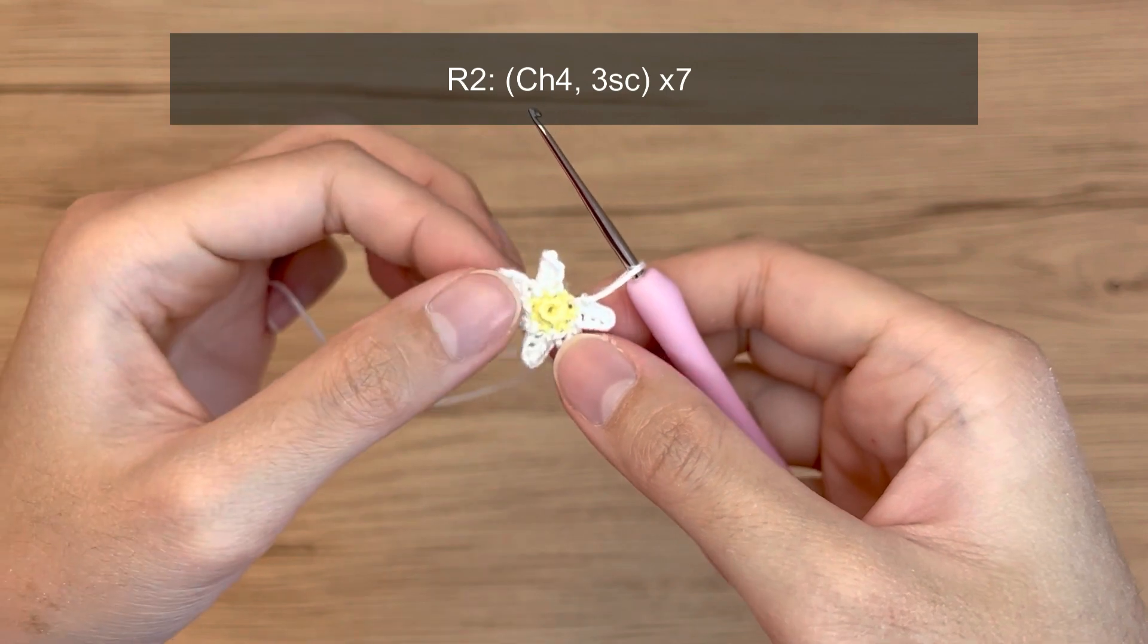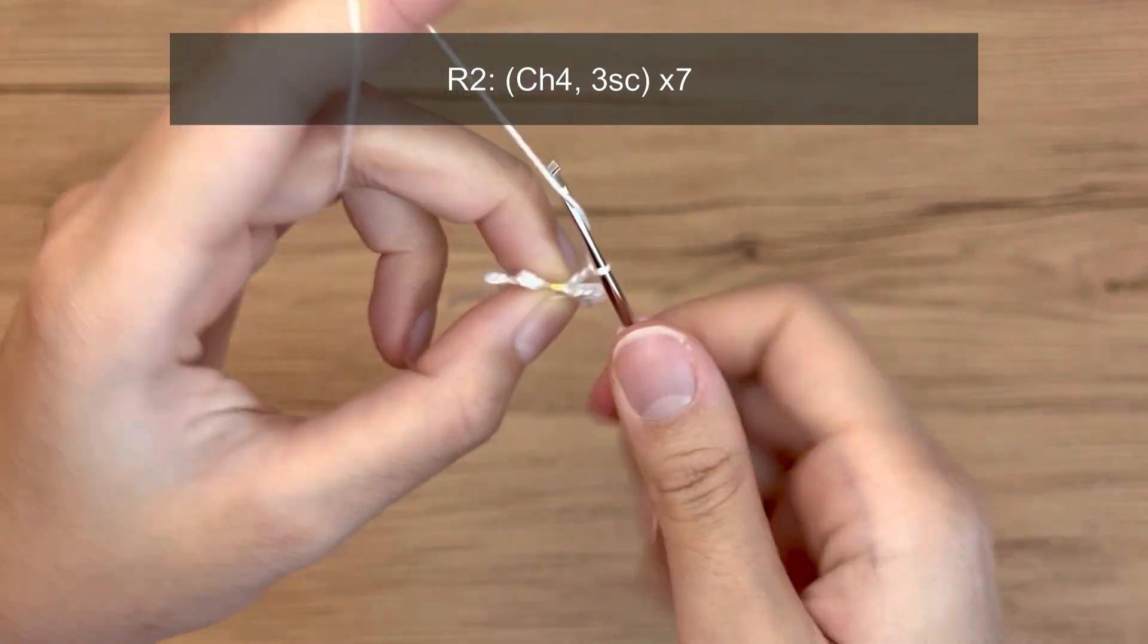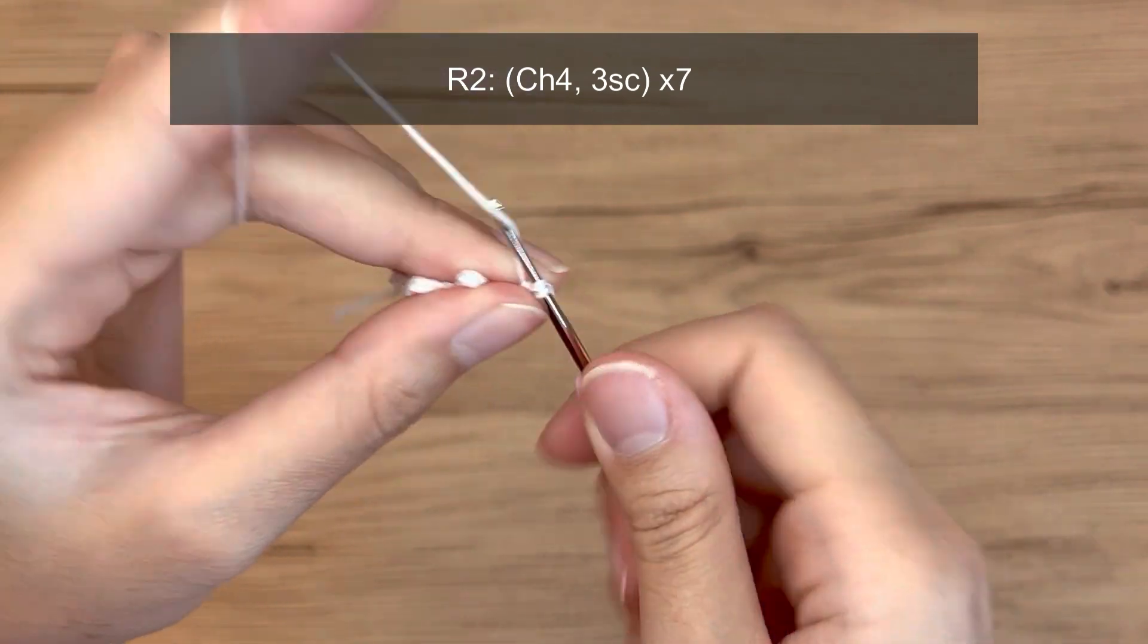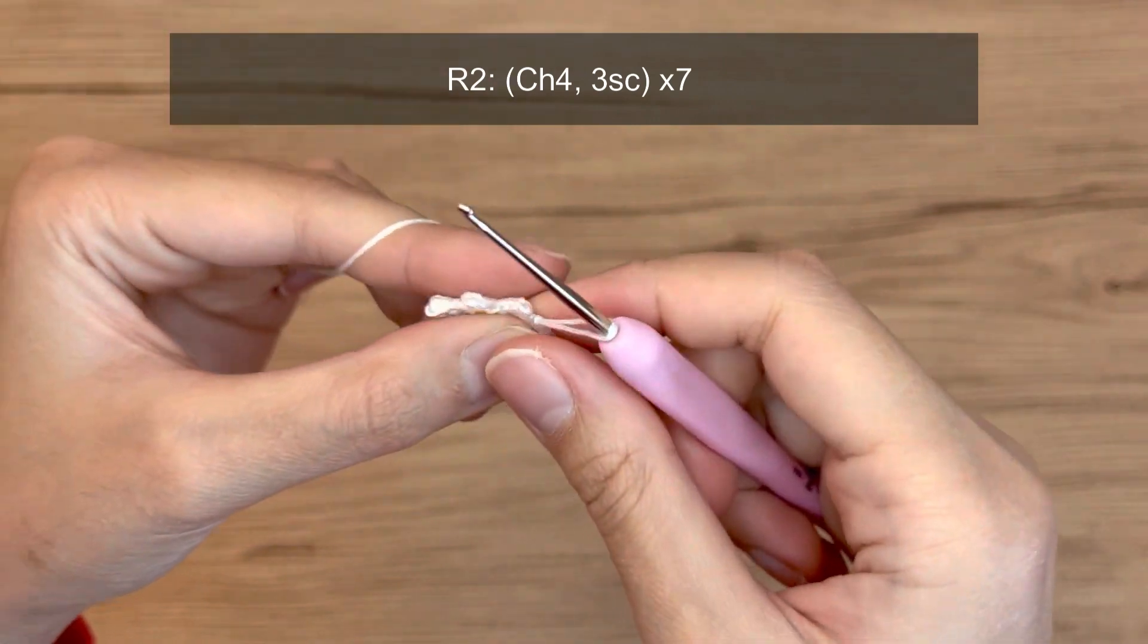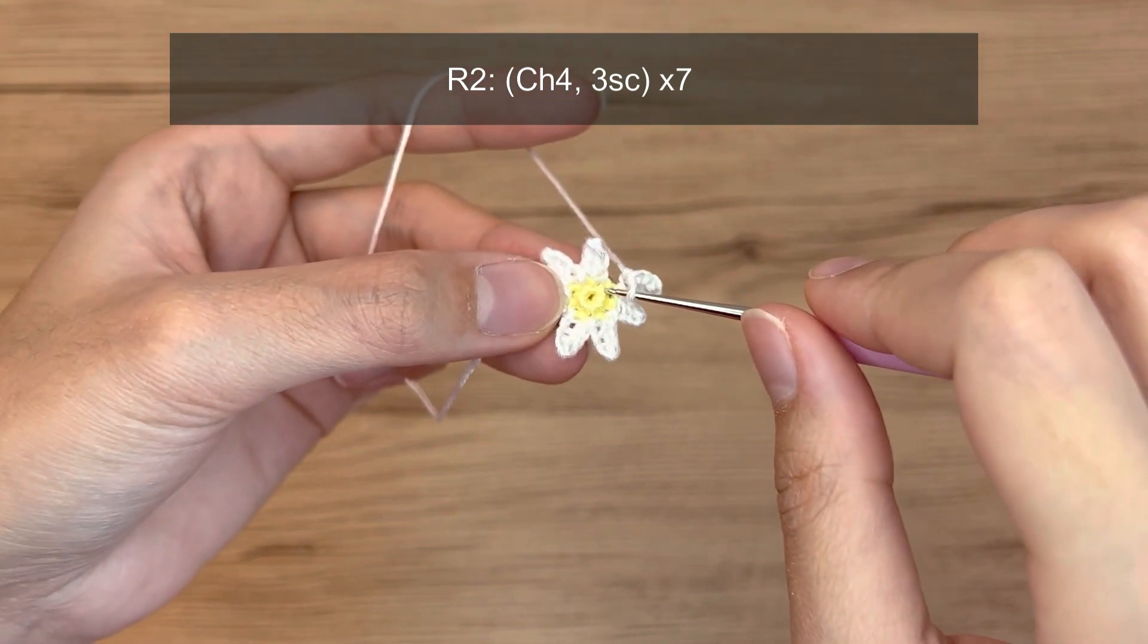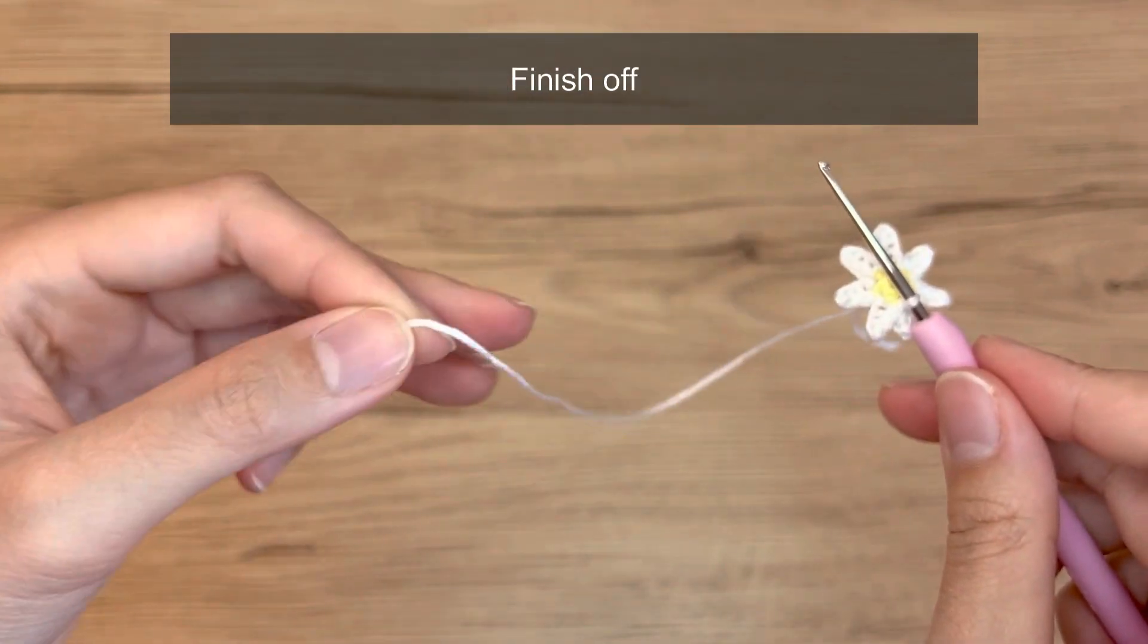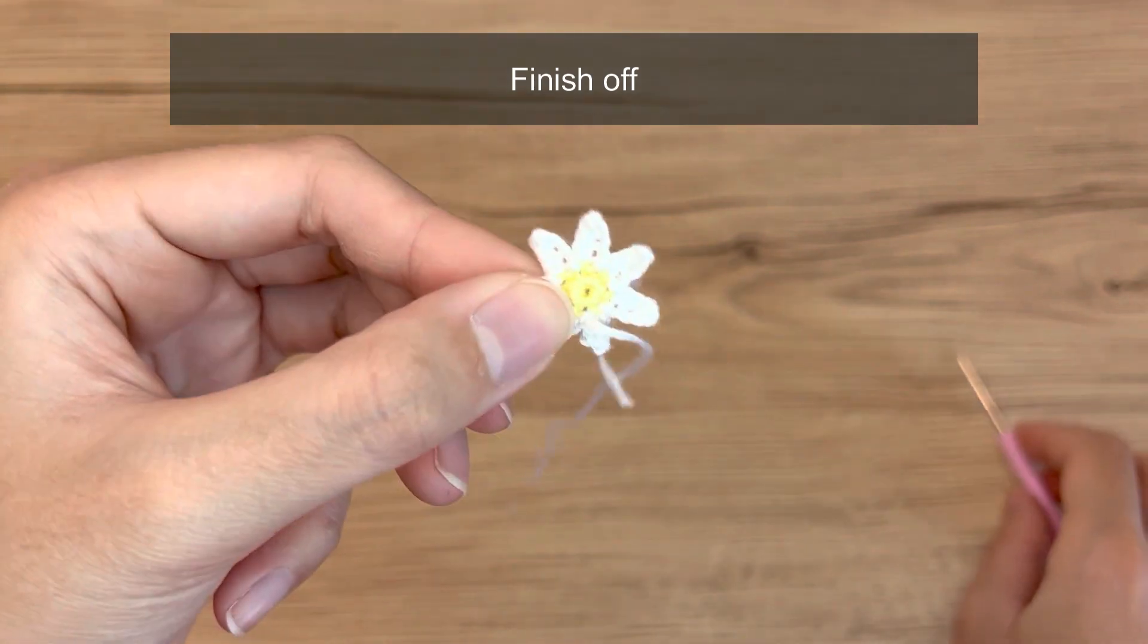All right, we have five petals now. Now chain four, two, three, four. Make three single crochet. One, two, three. And then in the next stitch, make a slip stitch. All right. Right now we have one, two, three, four, five, six. Six petals in total. We're going to make four chains and then three single crochet. And then the next stitch is going to be this one right here where we're starting off. Make a slip stitch. And once we're done, let's cut off a long tail so we can finish off. And pull that out just like that.